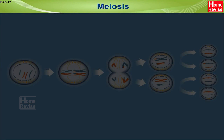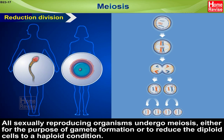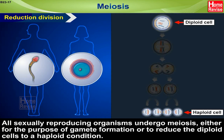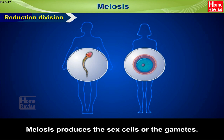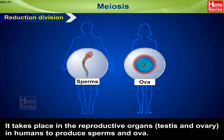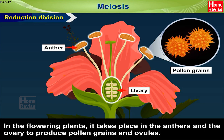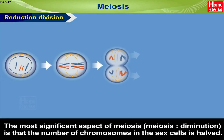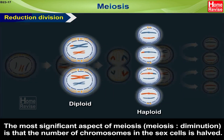Meiosis — Reduction Division: All sexually reproducing organisms undergo meiosis, either for the purpose of gamete formation or to reduce the diploid cells to a haploid condition. Two consecutive divisions occur here. Meiosis produces the sex cells or gametes. It takes place in the reproductive organs — testes and ovary in humans — to produce sperms and ova. In flowering plants, it takes place in the anthers and the ovary to produce pollen grains and ovules. The most significant aspect of meiosis is that the number of chromosomes in the sex cells is halved.